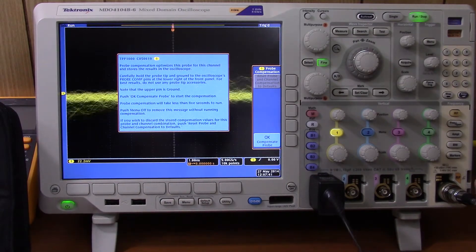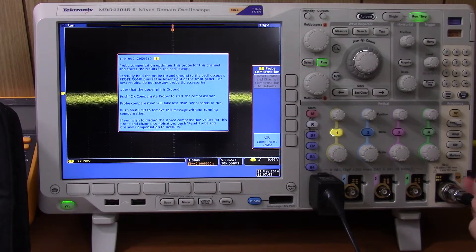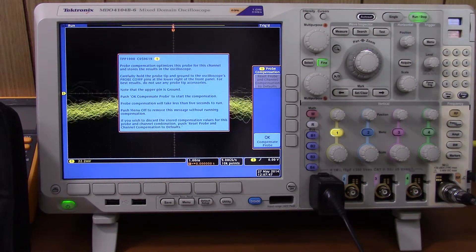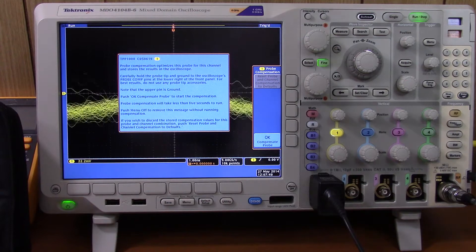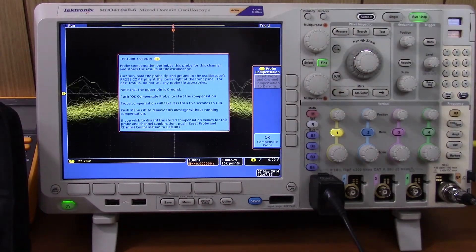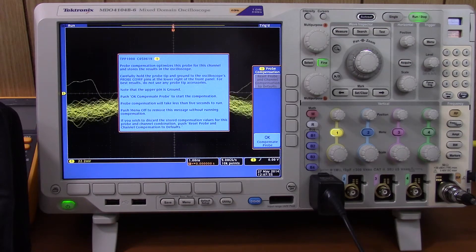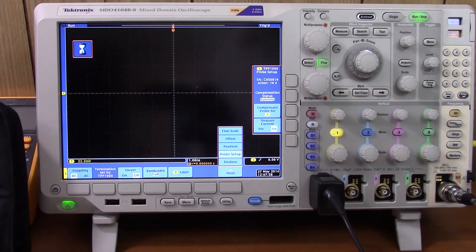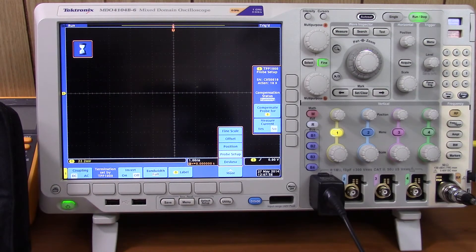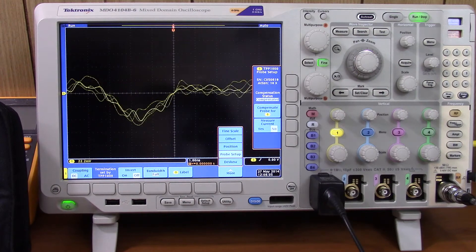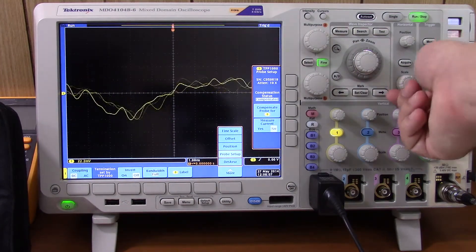And now there's a bunch of text. Let's read over that real quick. Carefully hold the probe tip and ground to the oscilloscope's probe compensation pins at the lower right. So ground goes up here. The other one goes right here. Know that the upper pin is ground. Okay, we got that. Push OK to compensate probe to start the compensation. Let's do that.